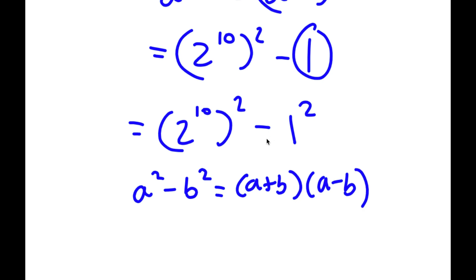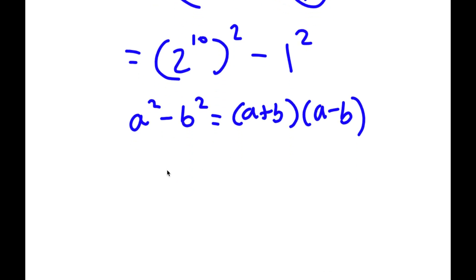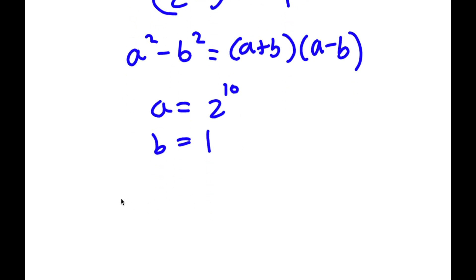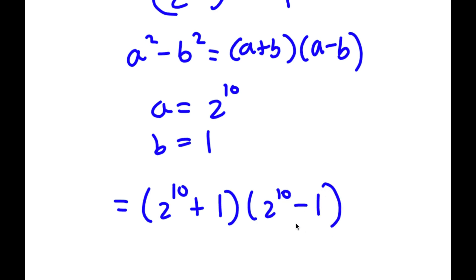So in this case, a is going to equal 2 to the power of 10, and b is going to equal 1. So now if I plug these values into our formula, a squared minus b squared is equal to a plus b times a minus b, I get 2 to the power of 10 plus 1 times 2 to the power of 10 minus 1.